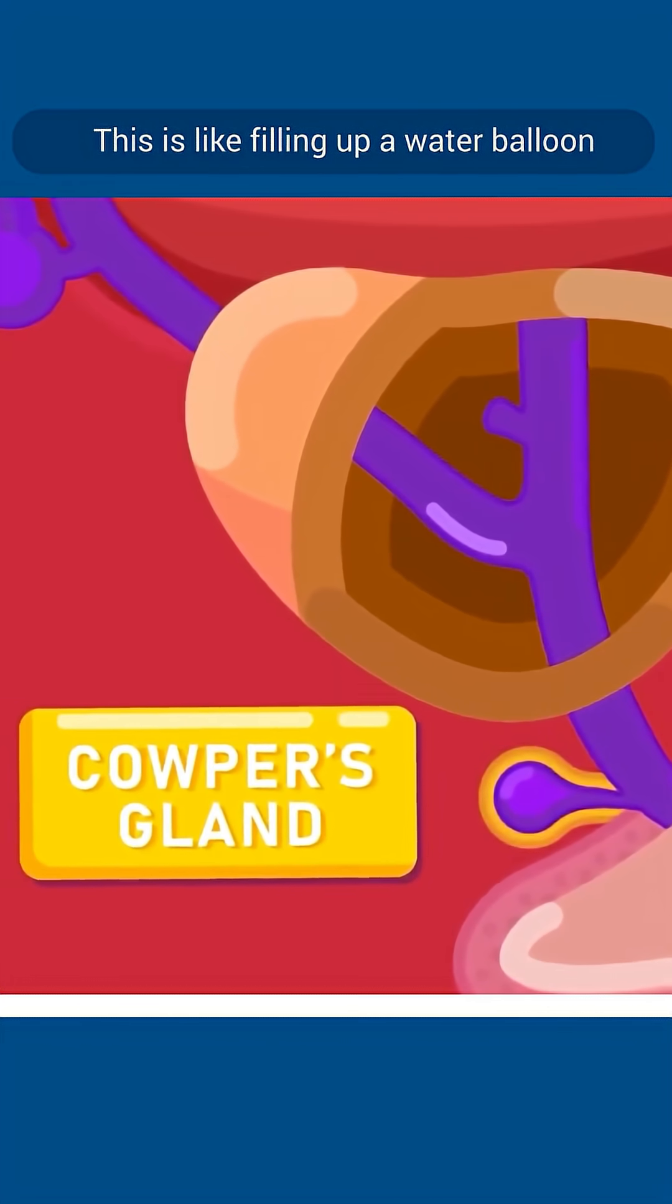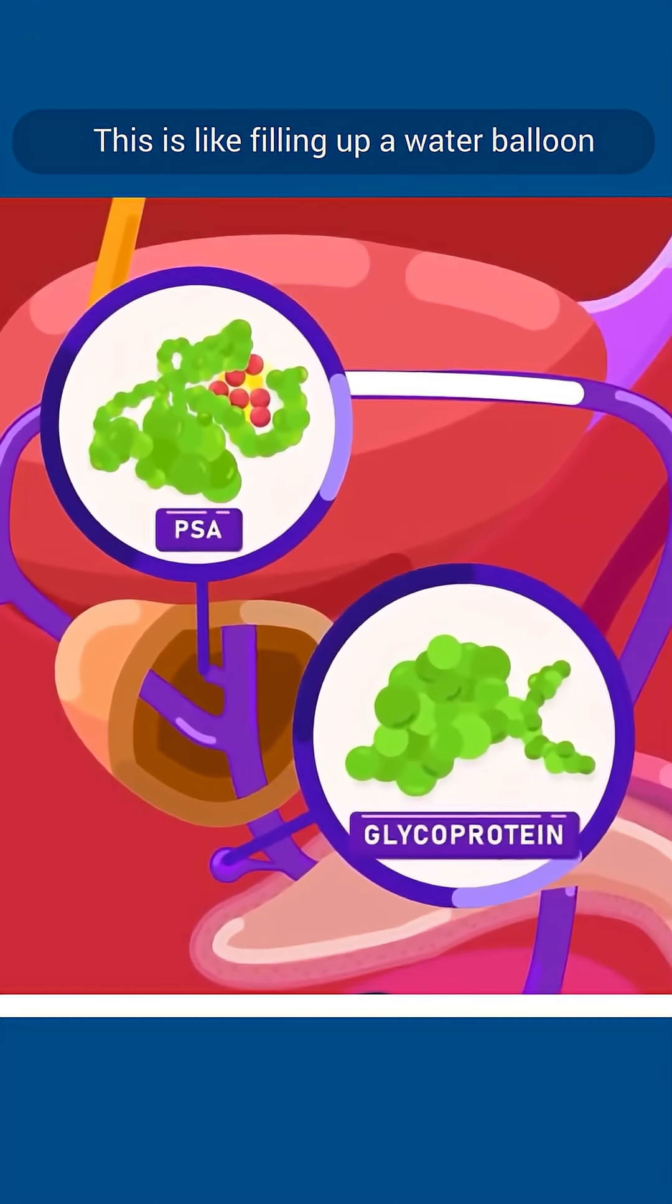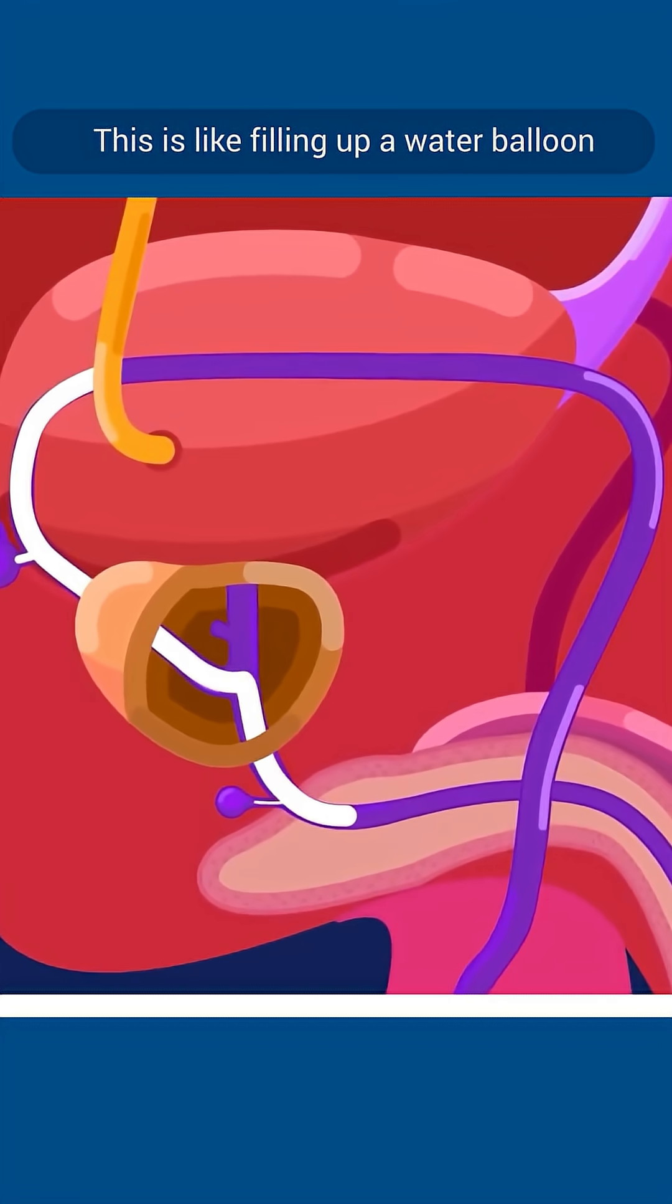The prostate gland, the cowper's gland, the seminal vesicle, the prostate, and the cowper's gland secrete a slippery fluid that mixes with the sperm called seminal fluid or semen.